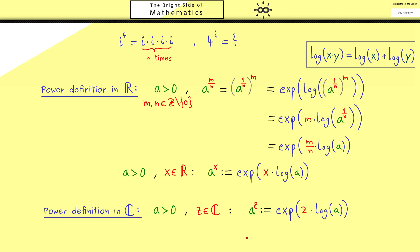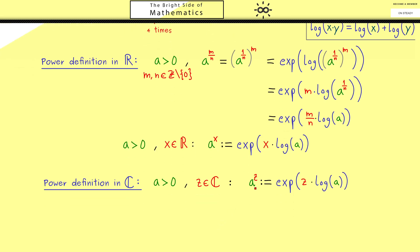In summary, you should remember: if the base is a positive real number, the exponent can be any complex number and we don't have a problem. For example, you can take Euler's number e as the base, and then e to the power z is simply the exponential function. This explains why we have this short notation for the exponential function.